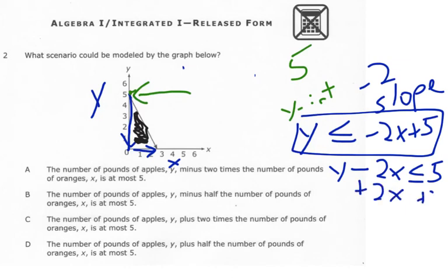And y would be less than or equal to 2x plus 5. Now that one doesn't match up on the slopes. That slope is a positive slope. This slope is a negative slope. So I'm going to cross off A.